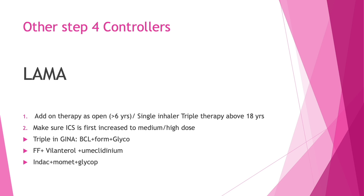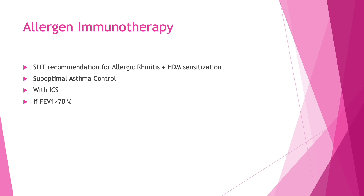The second add-on treatment is allergen immunotherapy. When stepping up, this may be done especially when the patient demonstrates house dust mite sensitization and has allergic rhinitis. It can be given in patients with suboptimal asthma control where allergen is implicated as a common cause. Remember, it is given with ICS, not alone, and is usually preferred for patients with a better lung function profile.